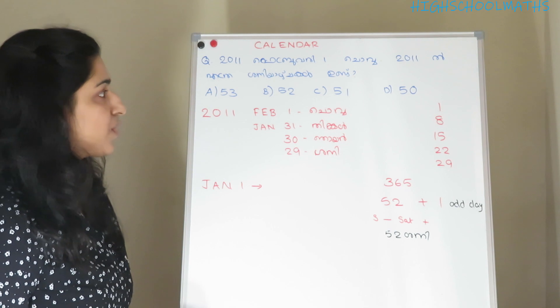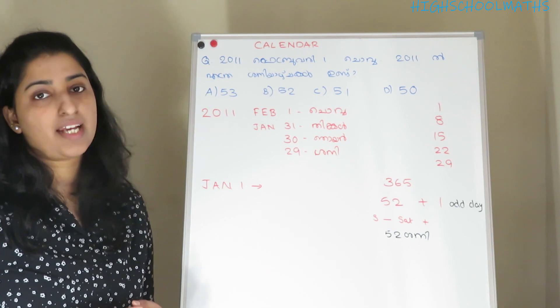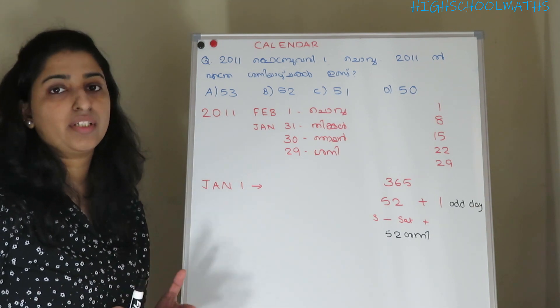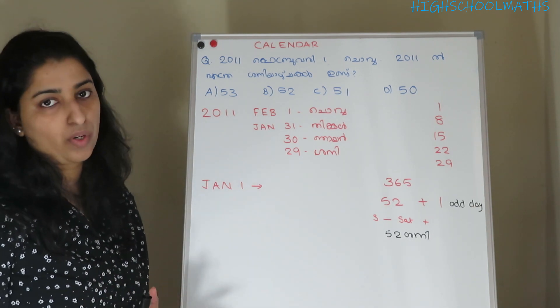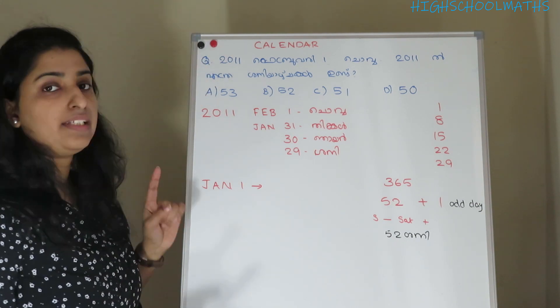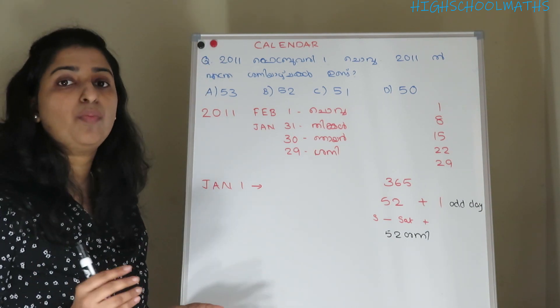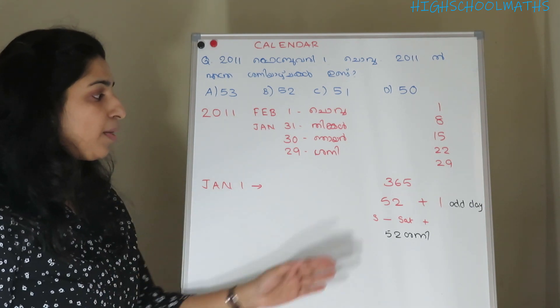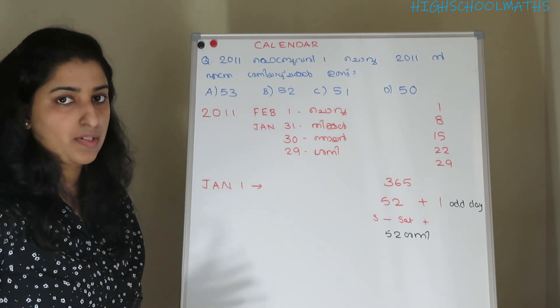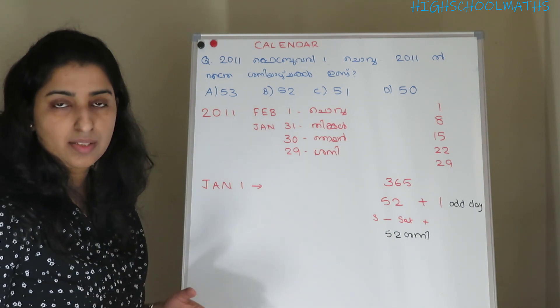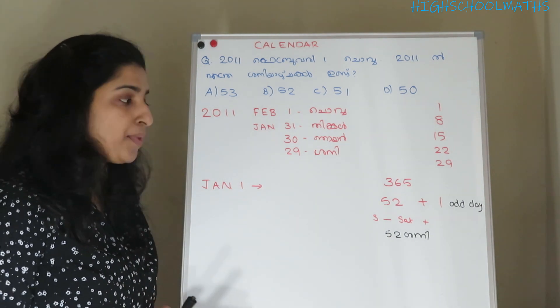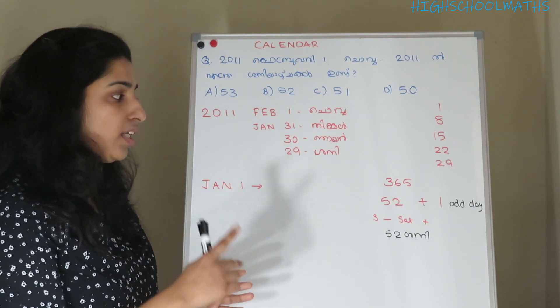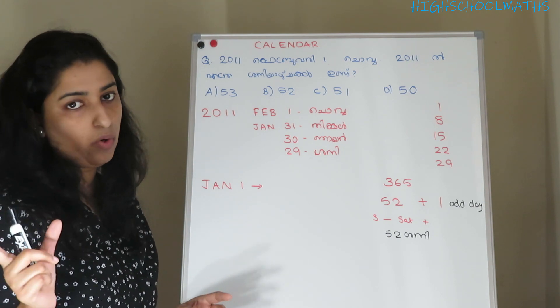Now, we are going to look at the question for February 2011. To find the answer, we will divide by 7 and look at the remainder. One day corresponds to one remainder.